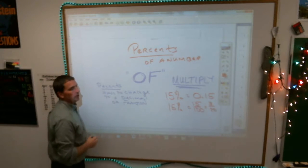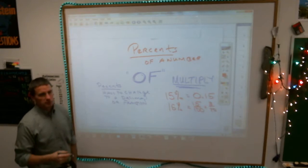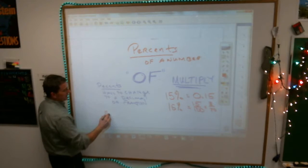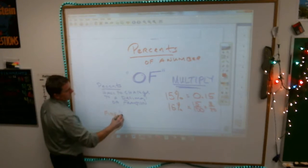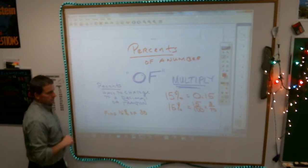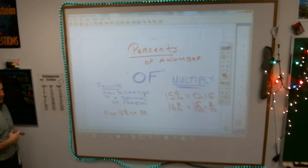So if you were finding 15% of something, for example, if this was the problem, find 15% of 30. Unless they tell you what to change the percent into, it is your choice.